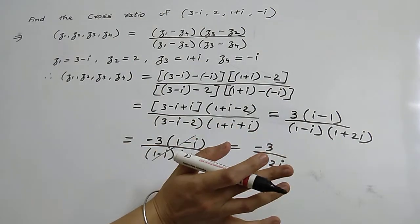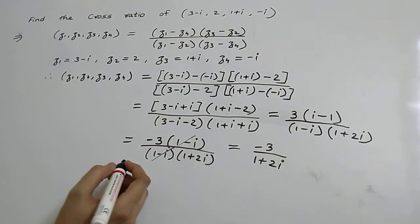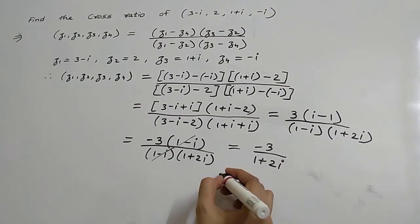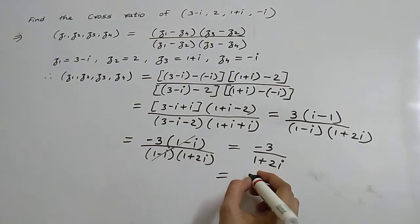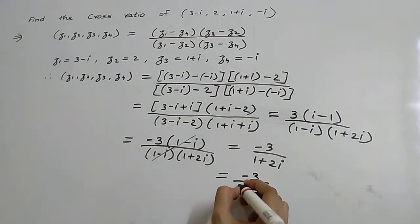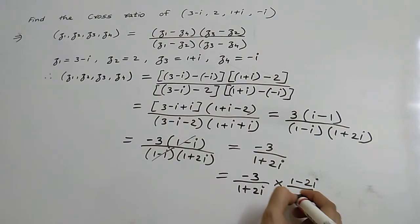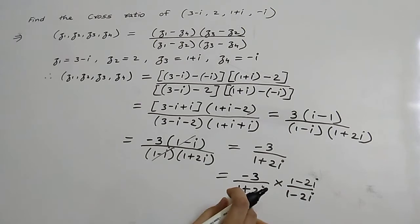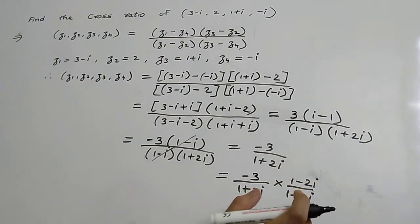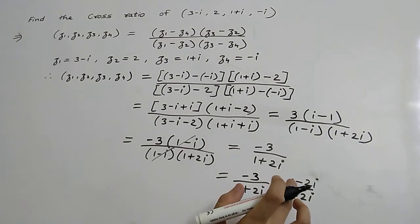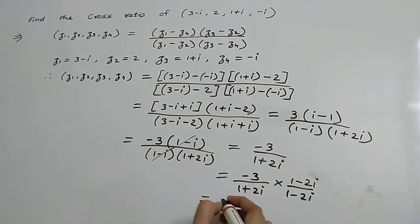Since we need to rationalize the denominator, we multiply by the conjugate. So -3 upon (1 + 2i) times (1 - 2i) upon (1 - 2i). The conjugate of 1 + 2i is 1 - 2i.